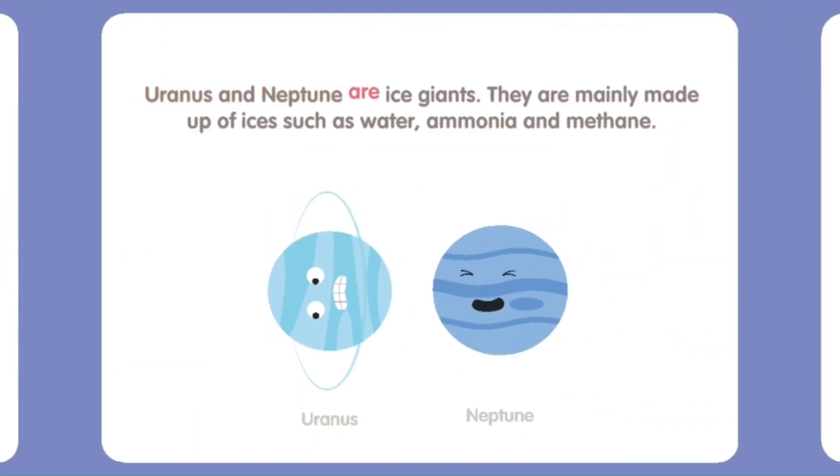Uranus and Neptune are Ice Giants. They are mainly made up of ice such as water, ammonia, and methane.